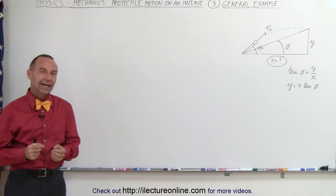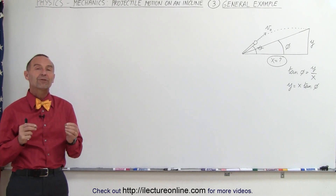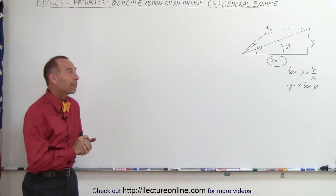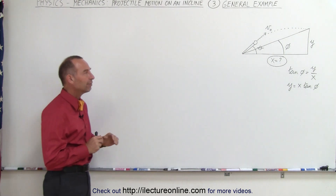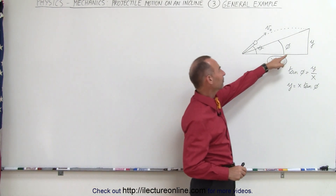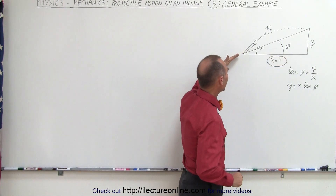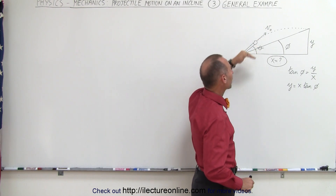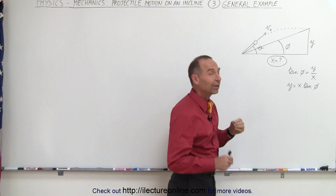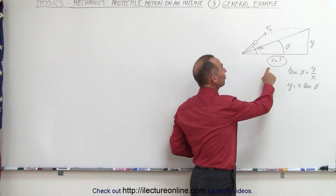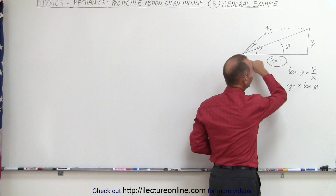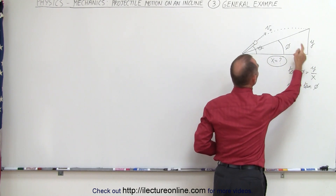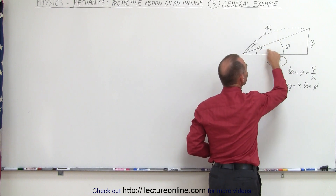Welcome to our lecture online. In the previous two examples we were given certain initial conditions and certain numbers, but in this example we're only given variables. We're given an incline that has an angle of phi and a projectile which is fired off at some initial velocity v-initial at an angle theta with respect to the horizontal. What we're trying to find is the distance x on the horizontal plane — how far will it go in this direction in terms of v-initial, theta, and phi.